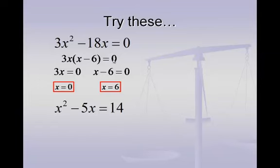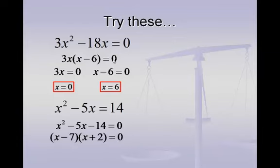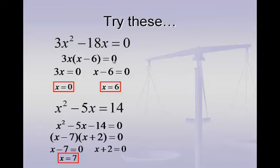On the second problem, I begin by subtracting 14 to the left side. Remember, we have to have our equation set equal to 0 before we start factoring. This is going to use the trinomial method. Think about things that multiply together to make negative 14: that could be 1 and negative 14, negative 1 and positive 14, 2 and negative 7, or negative 2 and positive 7. We want to pick the pair that adds up to negative 5 — that would be 2 and negative 7. So our factors are x minus 7 and x plus 2. On the first factor, we add 7, giving x equals 7. On the second factor, we subtract 2, giving x equals negative 2. So the answers to this last problem are 7 and negative 2.